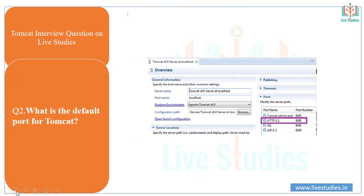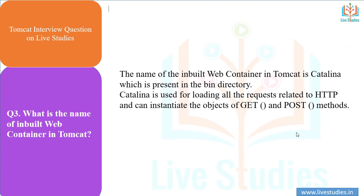The next question is: what is the default port of Tomcat? Most students and developers know that the default port is 8080. After installing Tomcat on the system, you can access it via localhost:8080. There is also SSL support, with HTTPS on another default port.